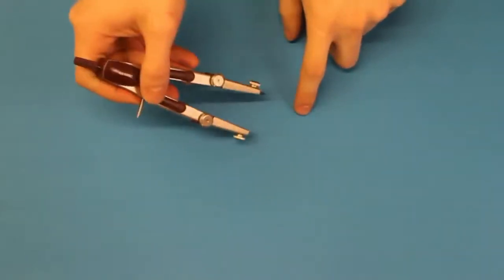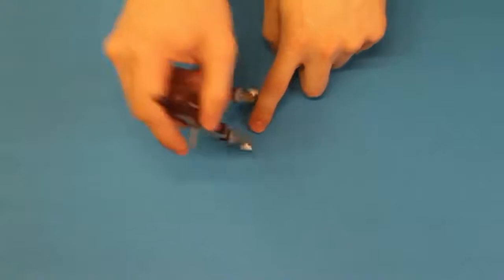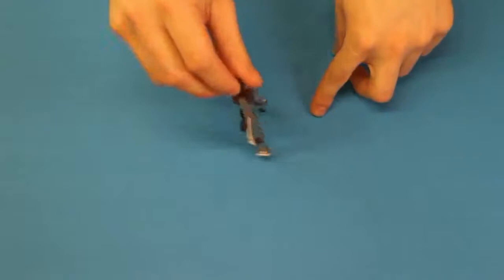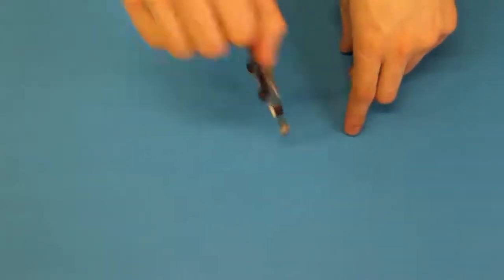Das hier am anderen Fuß ist die Bleistiftmine. Mit dieser wird der Kreis gezeichnet, indem man eine kreisförmige Bewegung mit der Hand macht, also ungefähr so.